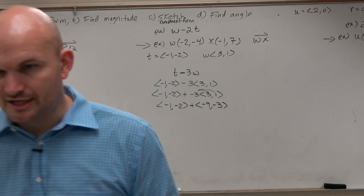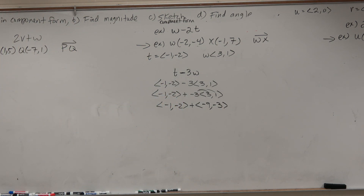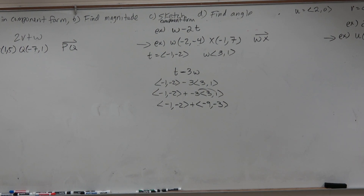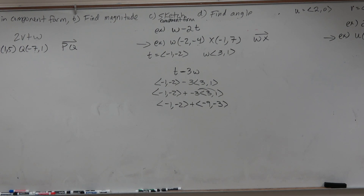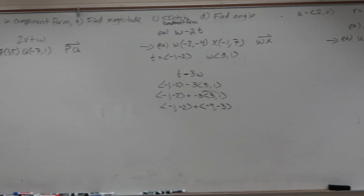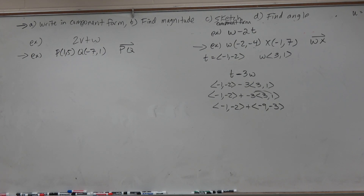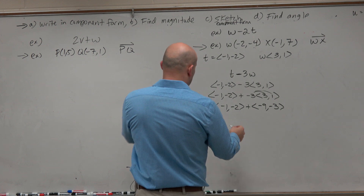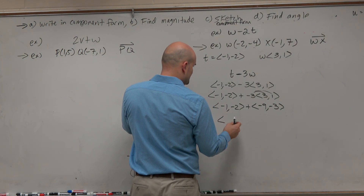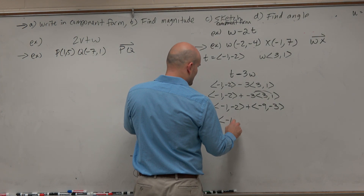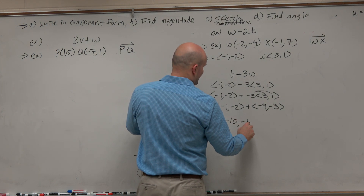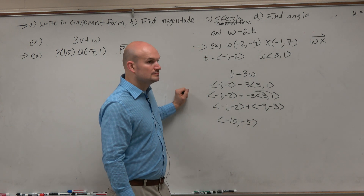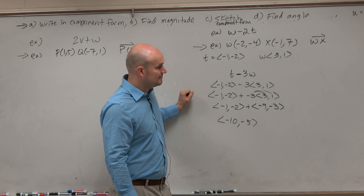Now that we have the addition, all we simply need to do is add the components — just add the first components and then add the second components. So therefore, this gives us negative 10, negative 5.